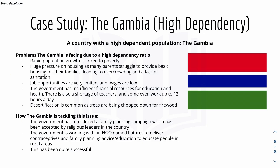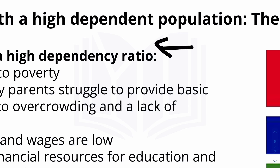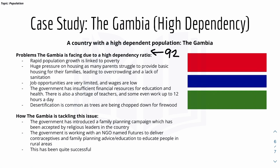The problems the Gambia faces due to its high dependency ratio of 92 per working person include: rapid population growth linked to poverty, as there is huge pressure on housing, water, and other resources. This leads to overcrowding and poor sanitation, as many people are squeezed into one area, risking water contamination and lack of basic sanitation. Job opportunities are very limited and wages are low. The government also has insufficient financial resources for education and health, and there is a shortage of teachers.